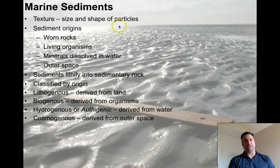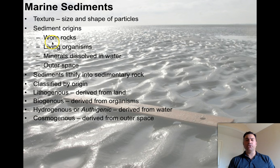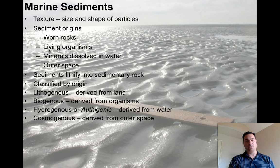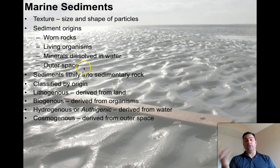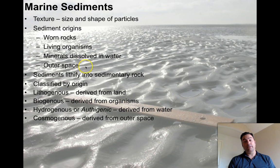The worn rocks — when rocks get broken down by wave action or weather — possibly living organisms, maybe little bits of algae raining stuff out of the water column, minerals dissolved in water. A lot of minerals on the earth's surface are dissolved in rain, and that rain winds up in rivers that dump into the ocean. And of course outer space — rocks are falling onto the earth all the time, and statistically speaking 71% of them should be landing in the ocean.